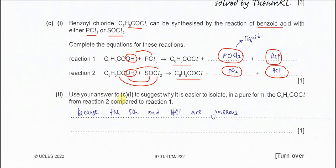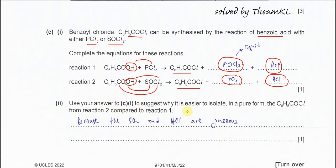Part 2. Use your answer in Part 1, suggest why it is easier to isolate in pure form the benzoyl chloride from reaction 2 compared to reaction 1. This is actually quite difficult for those who don't know the state. We know that SO2 and HCl, they are both in gaseous form. So therefore once SO2 and HCl form, it will just be removed and the benzoyl chloride will remain. So therefore the separation is going to be very easy because these two will be removed automatically.